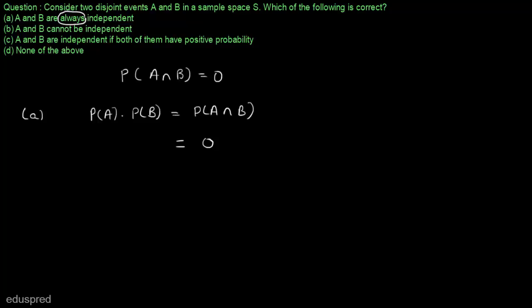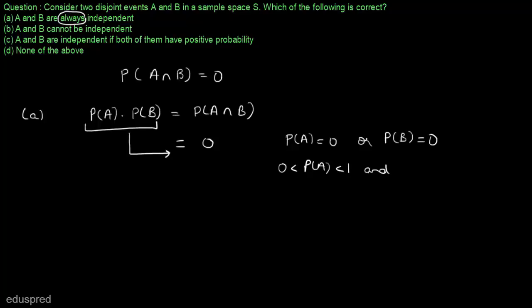The left hand side will be equal to the right hand side only if either probability of A is equal to 0 or probability of B is equal to 0. Only then this left hand side will be equal to the right hand side. So this means that A and B are not always independent. They will be independent only if either probability of A is equal to 0 or probability of B equal to 0. So part A is not right.